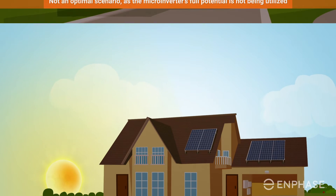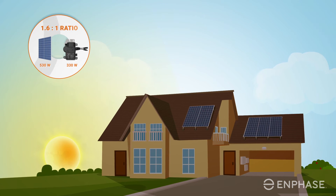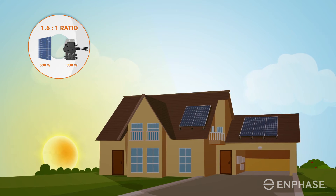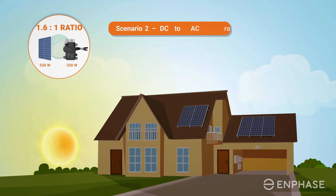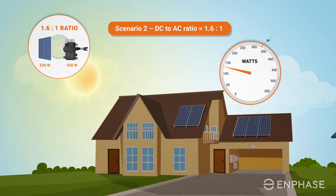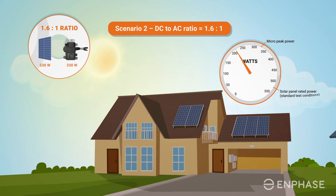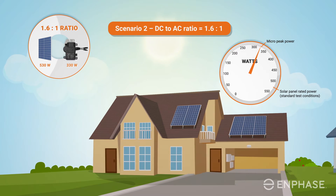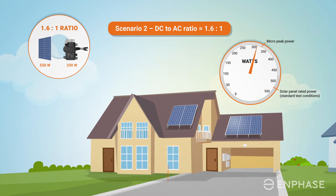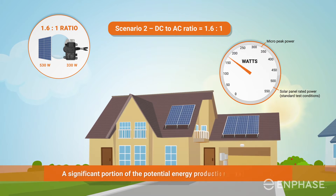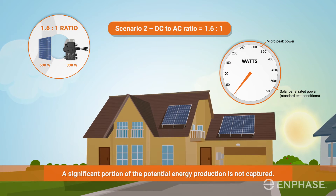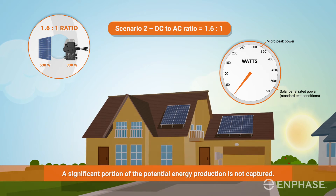With this pairing, the rated power of the solar panel is much higher than the peak power rating of the microinverter — a 1.6 to 1 ratio. With such a high ratio, the microinverter reaches its maximum power output frequently and throughout most of the year. A significant portion of the potential energy production is not captured. This too is a poor pairing choice.